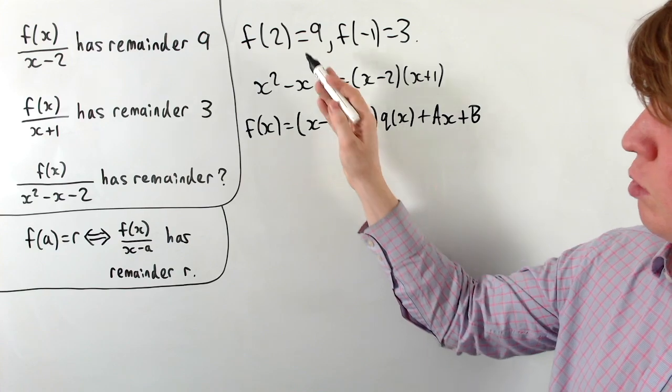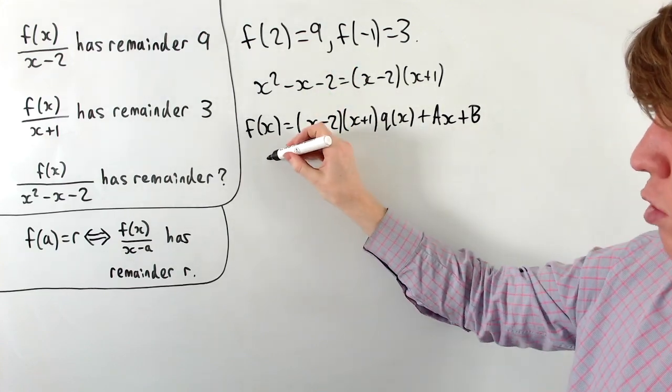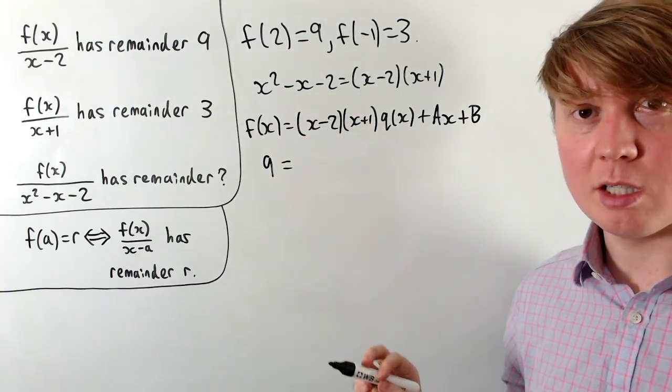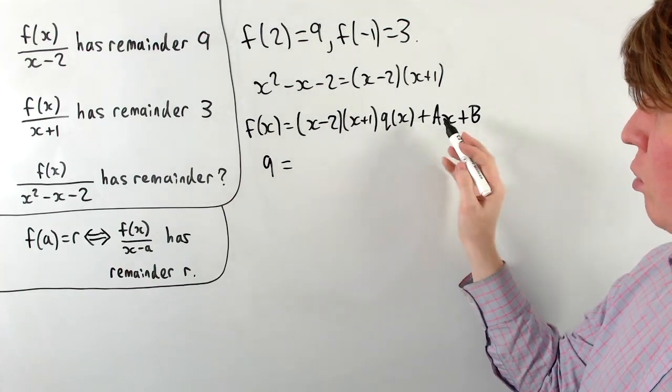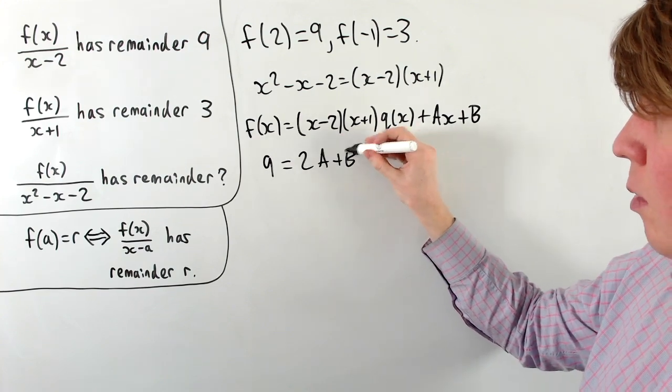Now we can substitute in x is 2 and use this fact that f(2) is 9. So substituting in x is 2, we get 9 equals, then all of this term is actually just 0, because we've got 2 minus 2 there. So we just get 9 is equal to a times 2 plus b, so we'll write this as 2a plus b.